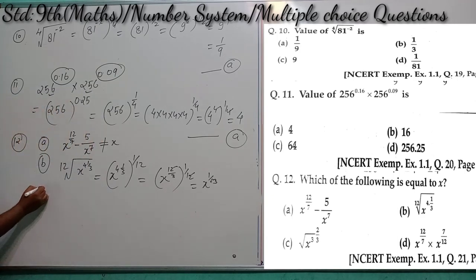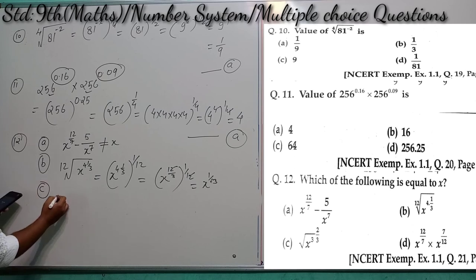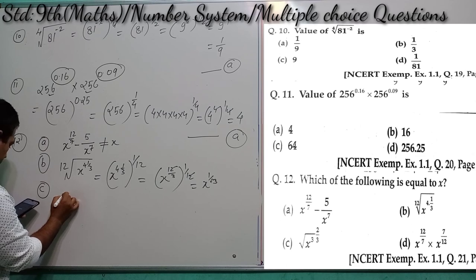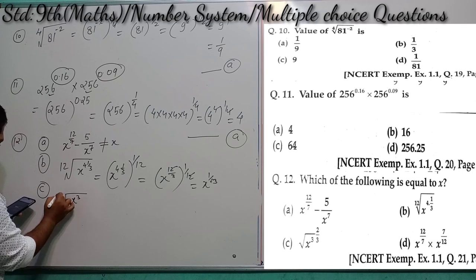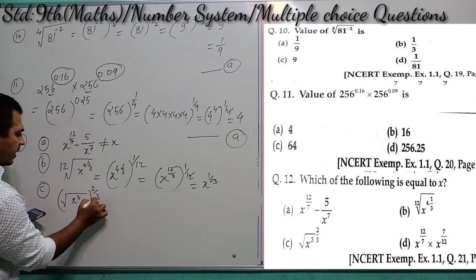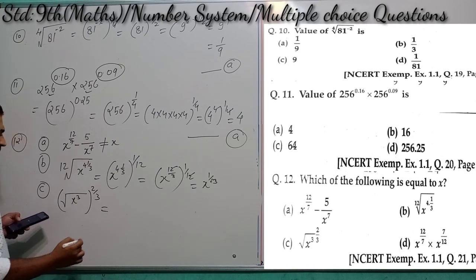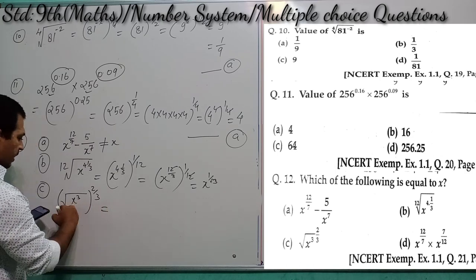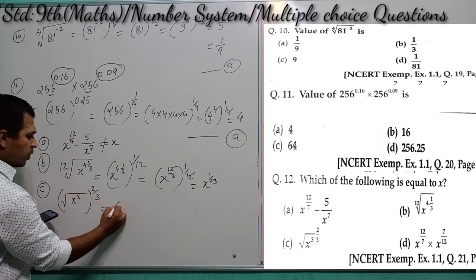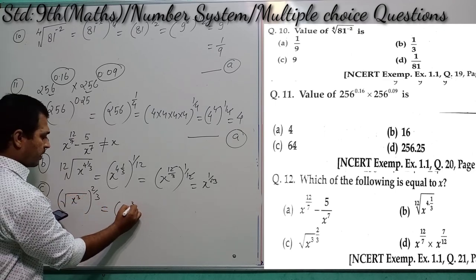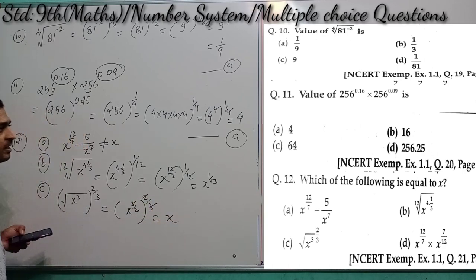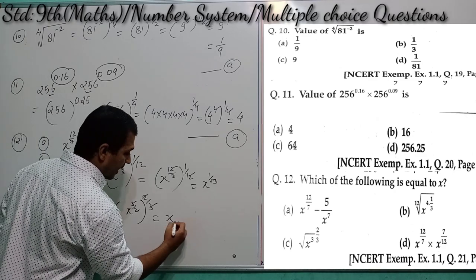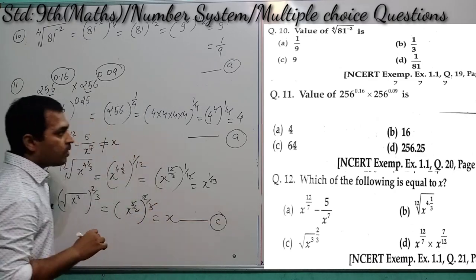Option C: (√(x³))^(2/3). This can be written as (x^(3/2))^(2/3). Multiplying the powers: 3/2 × 2/3 = 1. So we get x^1 = x. Option C is the correct answer.